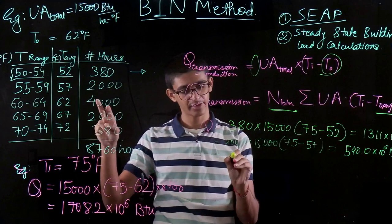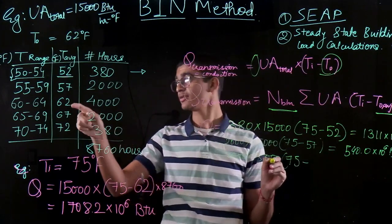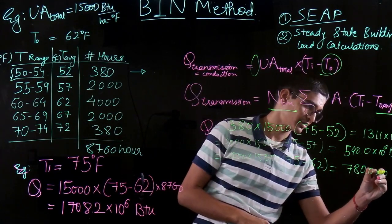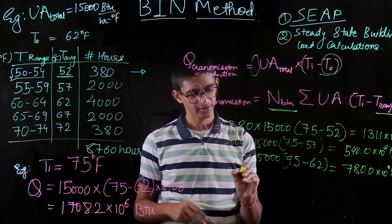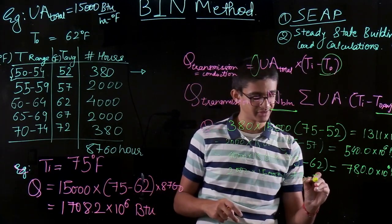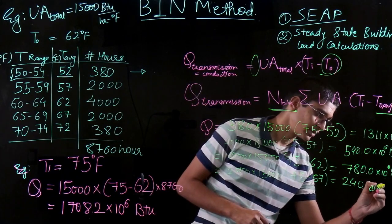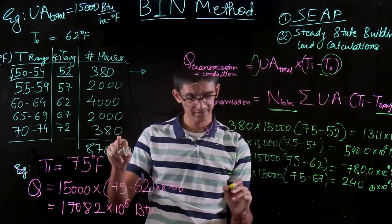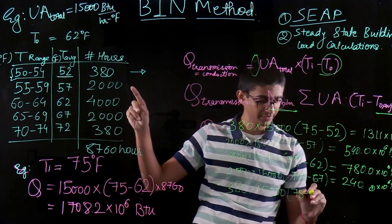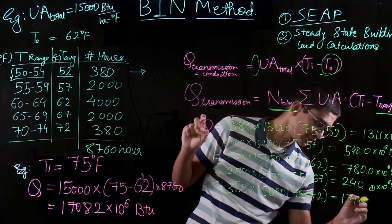Similarly for the third bin: Q = 4,000 × 15,000 × (75 − 62) = 780.0 × 10⁶ BTU. For the fourth bin: Q = 2,000 × 15,000 × (75 − 67) = 240.0 × 10⁶ BTU. And for the last bin: Q = 380 × 15,000 × (75 − 72) = 17.1 × 10⁶ BTU.